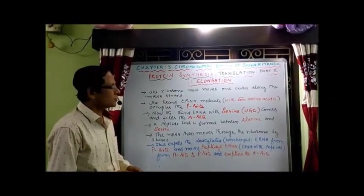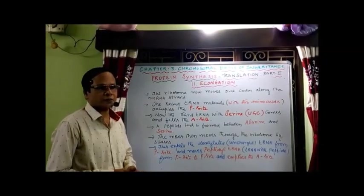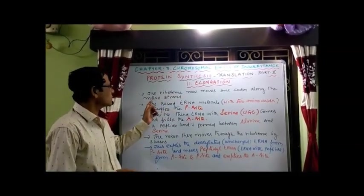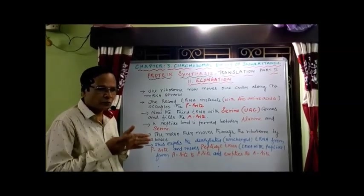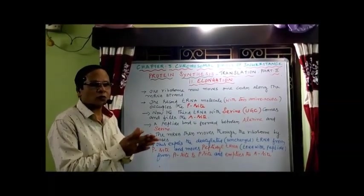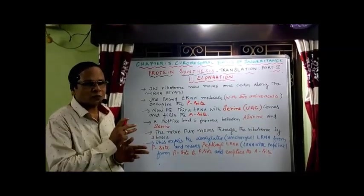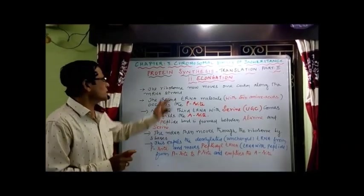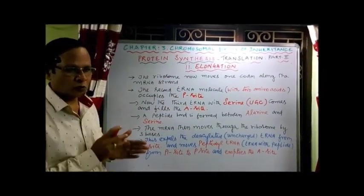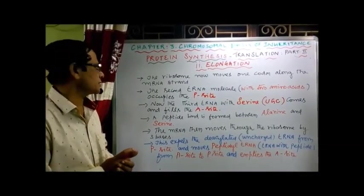When the first tRNA without amino acid leaves the P-site, the ribosome now moves one codon along the mRNA strand. The ribosome moves in the 5' to 3' direction, exposing the codons one by one on the mRNA. The ribosome moves one codon at a time, and as a result the next codon is exposed.